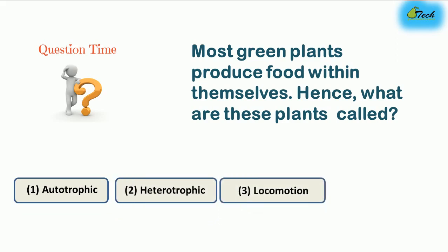Green plants that have the capacity to create their own food are called autotrophic. Heterotrophs, like humans, cows, buffaloes, and elephants, cannot create their own food. Locomotion is moving from one place to another, and growth is a living thing increasing in size.